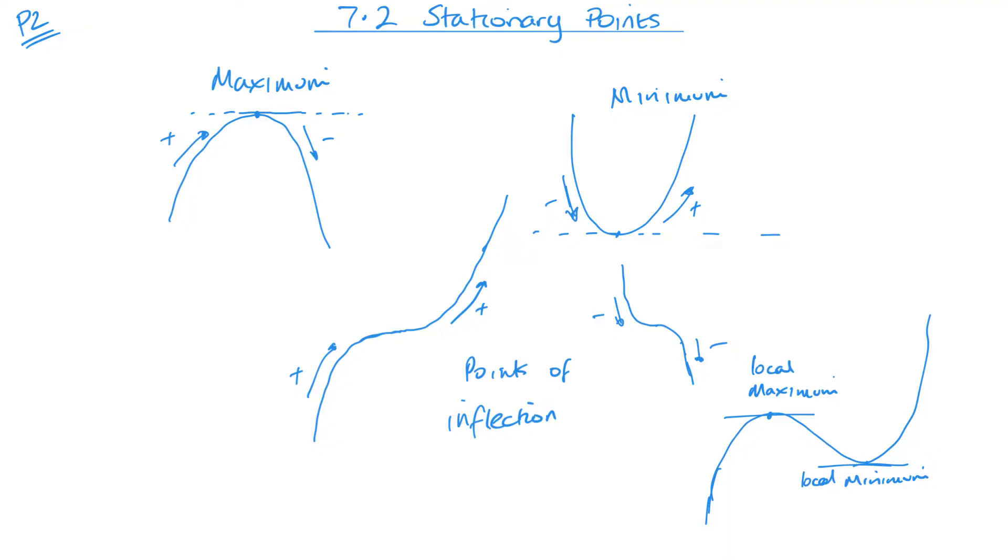Now we were talking about gradients, and that is essentially how we're going to go about finding these initially. You know, find my gradient, make it equal to zero—that will give me my stationary point. And then I can look either side of that to see whether it's a maximum, a minimum, or a point of inflection.